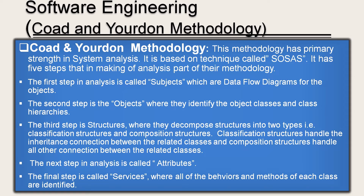The first is Coad and Yourdon methodology. This methodology has a primary strength of system analysis. It is based on a technique called SOSAS and has five steps in the analysis part. The first step is subjects, which are data flow diagrams for the objects. The second step is objects, where object classes and class hierarchies are identified. The third step is structures, decomposed into classification structures and composition structures — classification structures handle inheritance connections and composition structures handle other relationships. The fourth step is attributes. The fifth and final step is services, where all behaviors and methods of each class are identified.